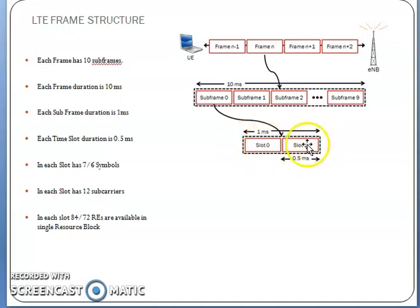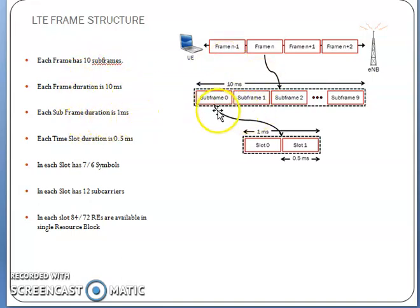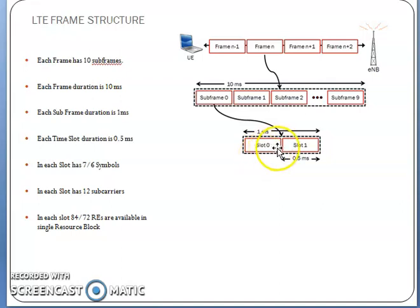Each slot is 0.5 milliseconds. Each frame has 10 subframes, frame duration is 10 milliseconds, subframe duration is 1 millisecond, and time slot duration is 0.5 milliseconds. Each slot has 7 or 6 OFDM symbols — slot 0 and slot 1 each contain 7 or 6 OFDM symbols depending on your cyclic prefix.